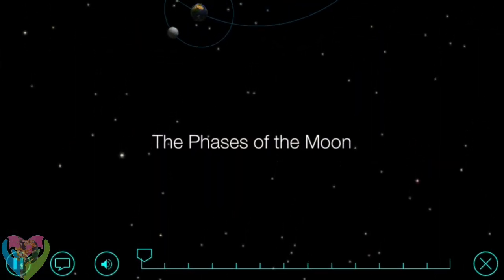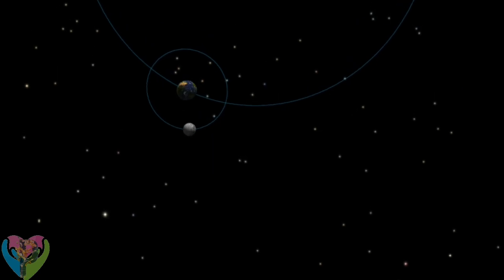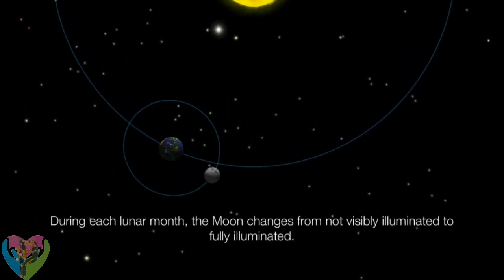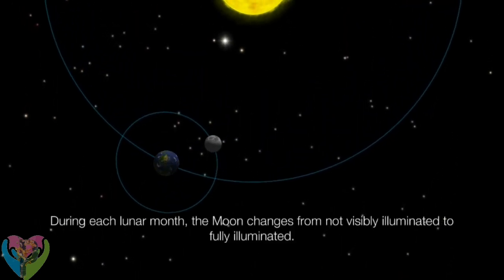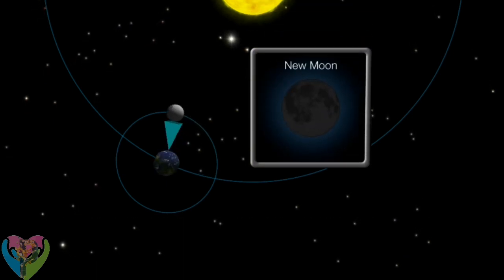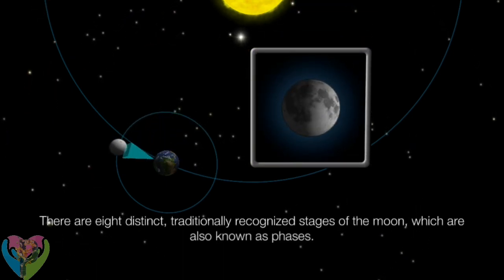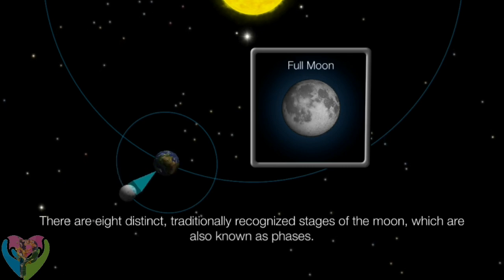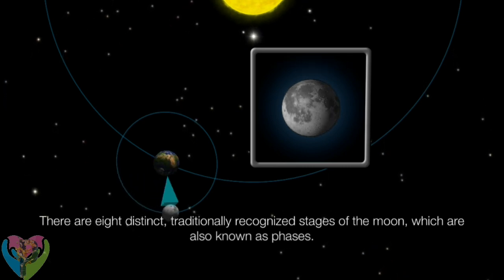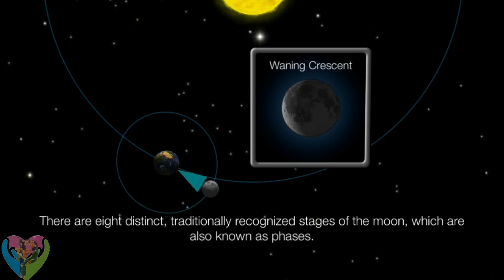The phases of the Moon. Why does the Moon look different every night? During each lunar month, the Moon changes from not being visibly illuminated to being fully illuminated. There are eight distinct, traditionally recognized stages of the Moon, which are also referred to as its phases.